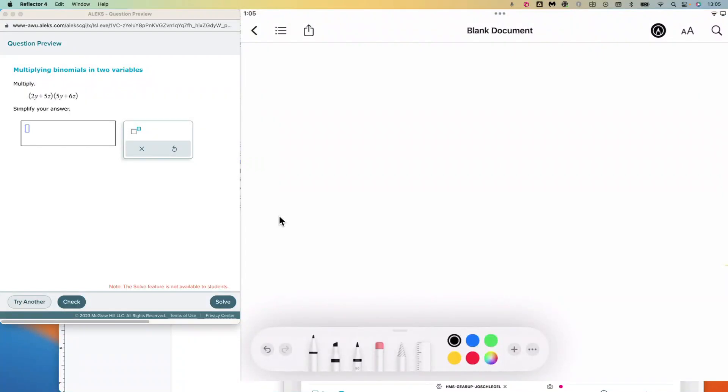Alright, so when multiplying two binomials, what ends up happening is teachers try to teach some sort of weird little tricks. I'll demonstrate those right now and talk about why we're not going to do them.